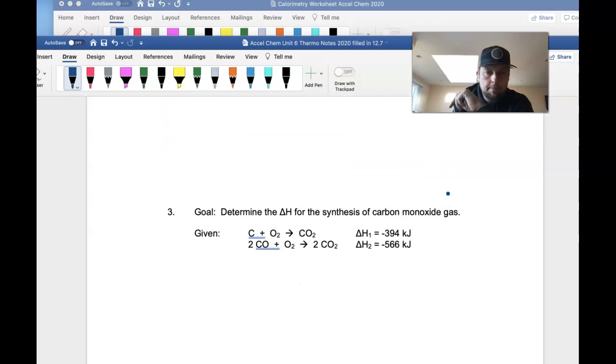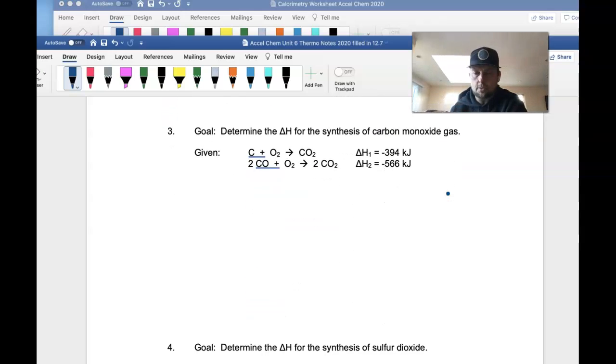Let's scroll down and look at number three, there's a little bit more shifting on this one. And as before, we have to write the synthesis of carbon monoxide gas correctly. So our goal is carbon plus O2, it's diatomic, gives carbon monoxide. This is not balanced, so I'll put a two here and a two here. And I usually say delta H equals question mark, because that's what we're trying to find.